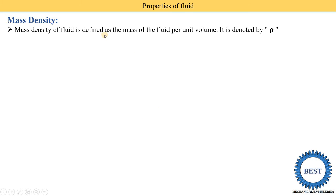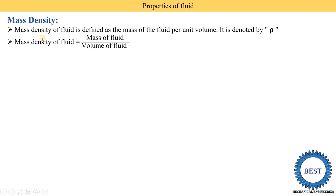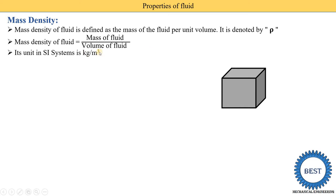Mass density of a fluid is defined as the mass of fluid per unit volume, and it is denoted by rho. Mathematically, mass density of fluid is equal to mass of fluid divided by volume of fluid. The unit of mass density in the SI system is kg per meter cube.